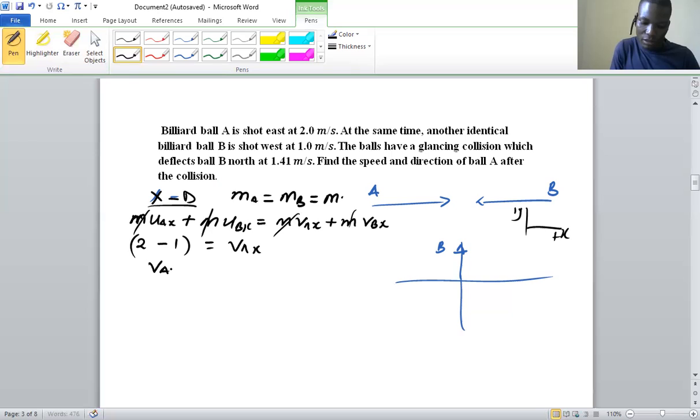The x component of velocity for ball A will be 1 m/s, meaning this ball will continue moving in the positive direction toward the east.